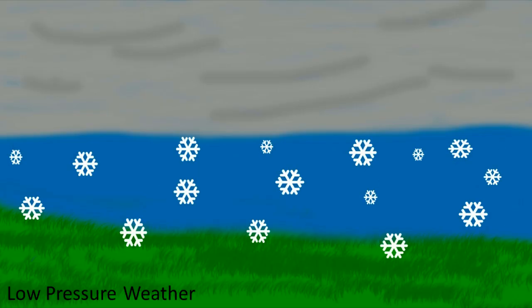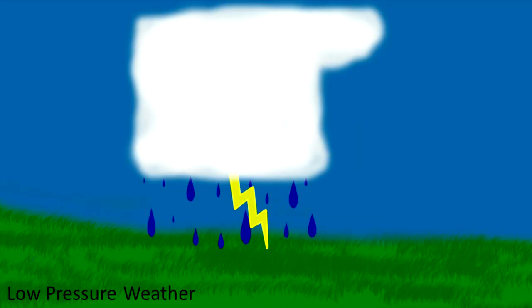If a low pressure system is nearby, you'll usually experience the opposite. You'll get everything from a dark, gray, gloomy day, to rain, to snow if it's cold enough, and if it's warm enough, you'll get thunderstorms. So remember this the next time you see that weather map on TV: that big blue H generally means nice weather, while that big red L means bad weather. Thanks for watching.